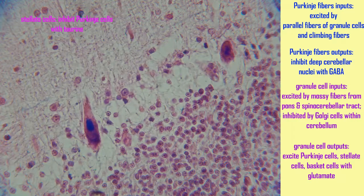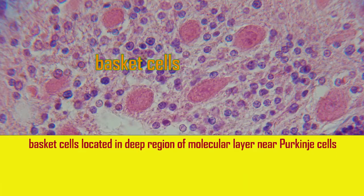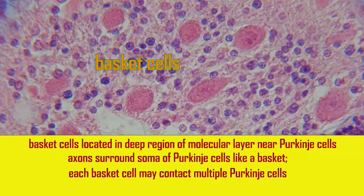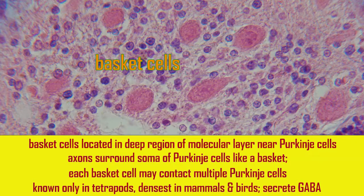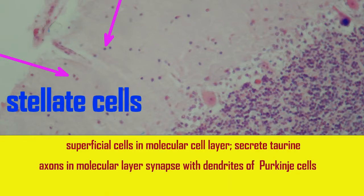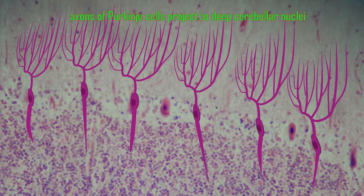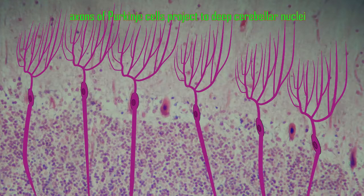The Purkinje cells can then be inhibited by neurons in the molecular layer, by both the basket cells, which wrap their axons around the soma of the Purkinje cells forming a basket, and by the stellate cells, which contact the dendrites.